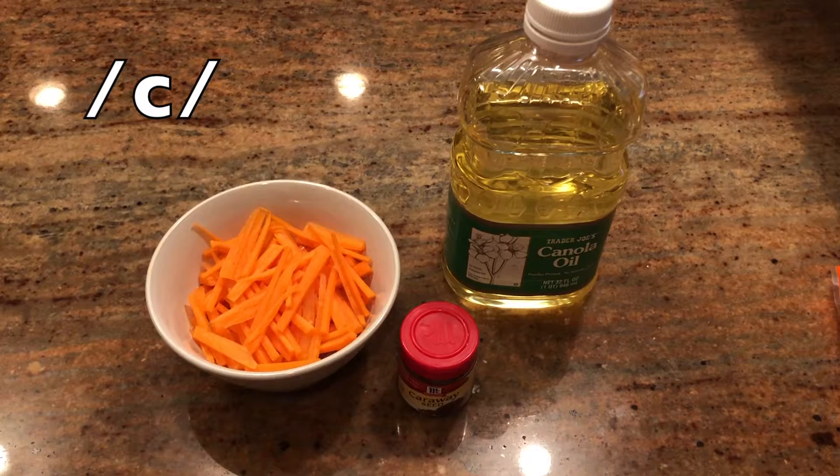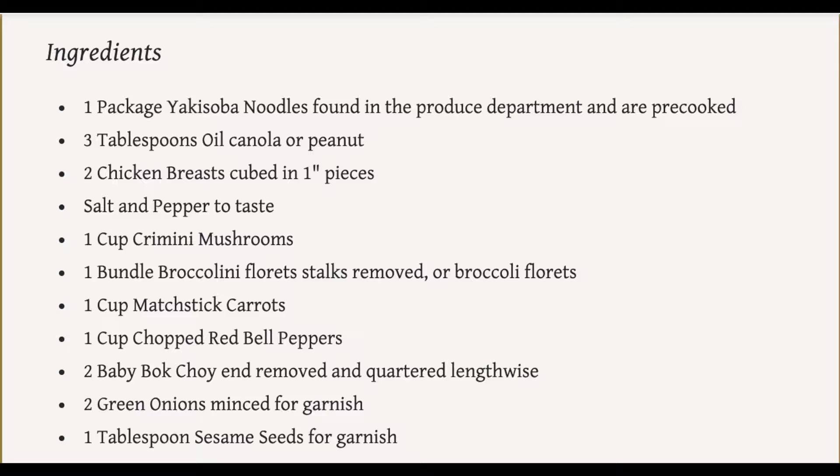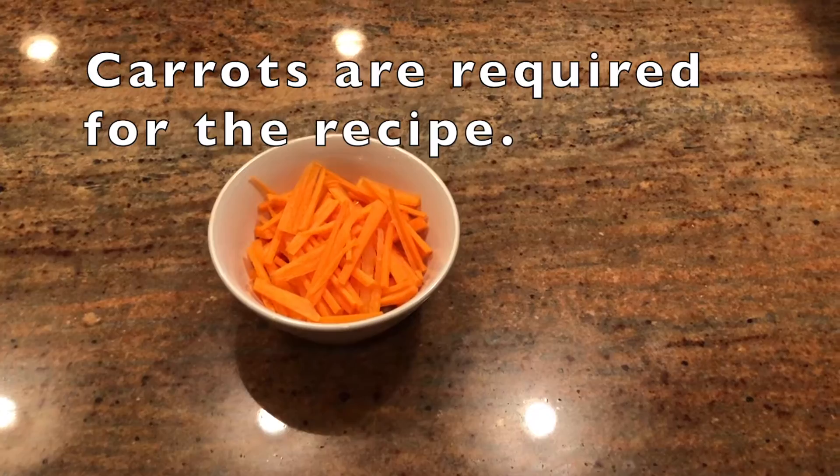Here I have three different ingredients, all beginning with C. As more input comes in, certain ingredients can be taken away. I have carrots, caraway, and canola oil. To narrow down the choices, I can refer to the ingredients list to add context, allowing me to correctly choose the carrots.